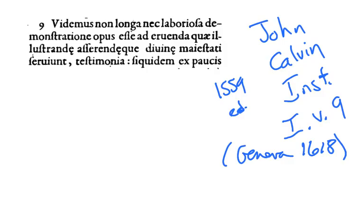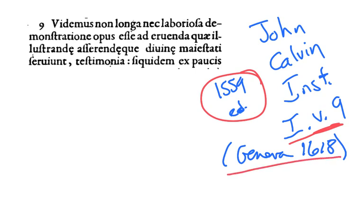Welcome to Latin Per Diem. Today we begin a series on John Calvin's Institutes of the Christian Religion. This excerpt is taken from Book 1, Chapter 5, Section 9. It's the 1559 edition, the last one that Calvin issued before his death in 1564, and this text is from the 1618 printing in Geneva. Let's take a look.